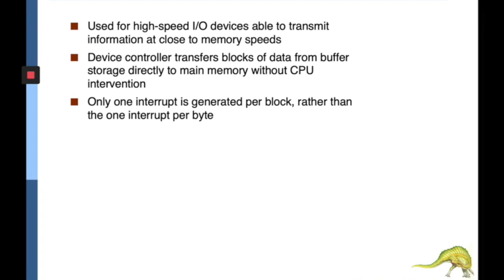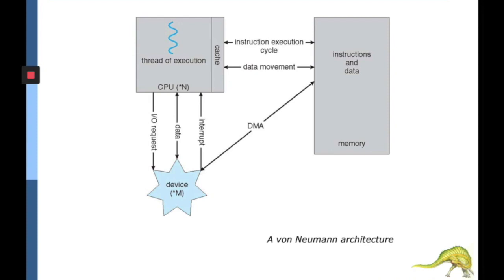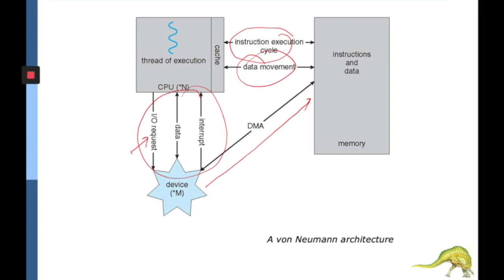Direct Memory Access (DMA) helps independently transfer data from I/O devices directly to memory with minimum CPU intervention. The device controller transfers blocks of data from buffer storage directly to main memory without CPU intervention, and is used for high-speed I/O devices able to transfer information at close to memory speed. Rather than sending one interrupt per byte, DMA sends one interrupt per block. This allows devices to directly communicate with memory, freeing CPU cycles for other instruction execution — DMA is a very powerful feature of modern computers.